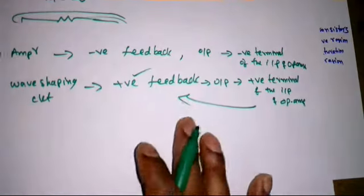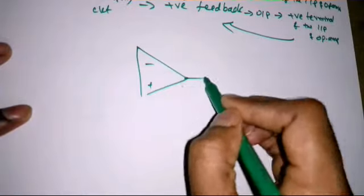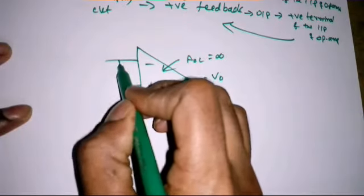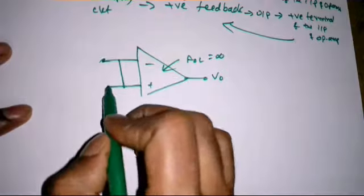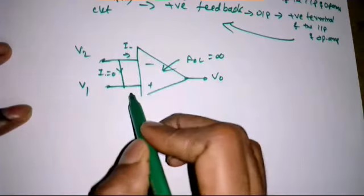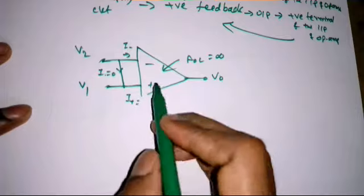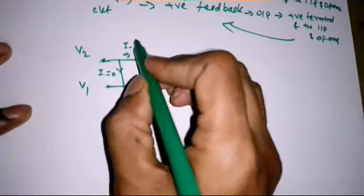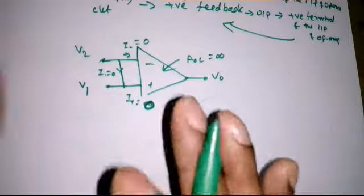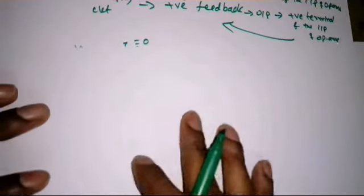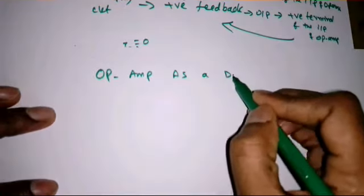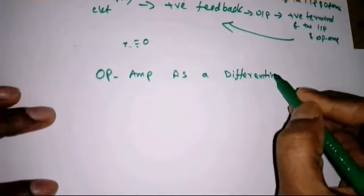So this is the virtual ground concept of the op-amp. To summarize: to achieve infinite open loop gain, the inverting and non-inverting terminals are virtually connected together so V1 equals V2, and the current between those terminals is zero. Because the input impedance of the op-amp is infinity, the current into those terminals is zero.